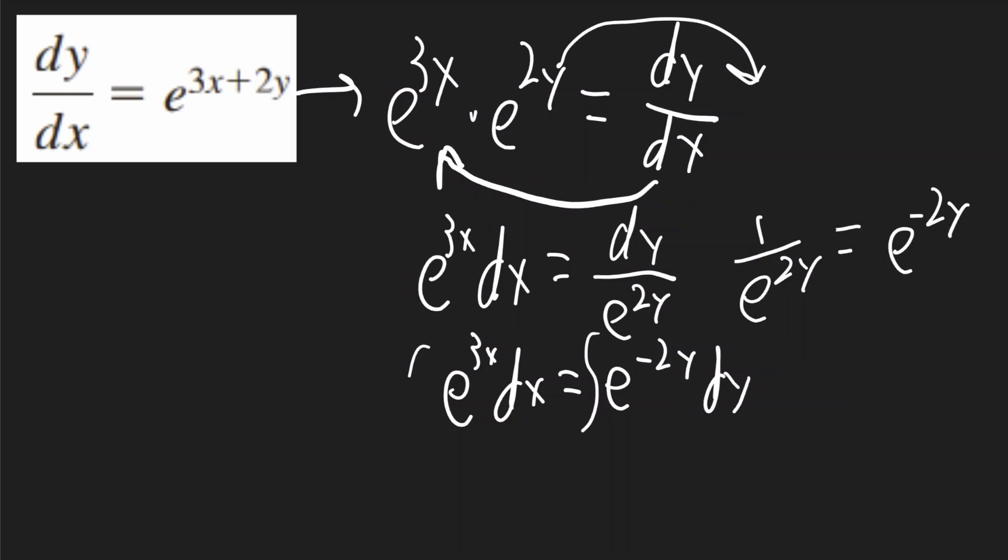I can now integrate both sides, and by using u substitution, I'll get that the left side will be equal to 1 third e to the 3x plus c, and the right side will be negative 1 half e to the negative 2y.